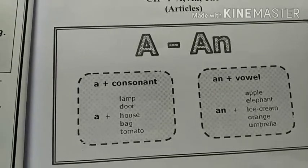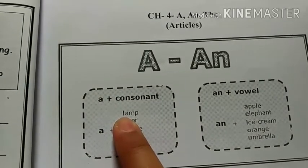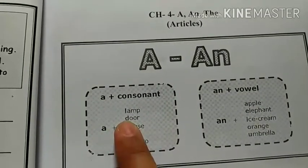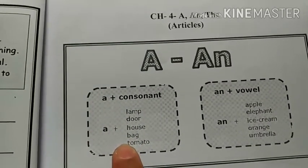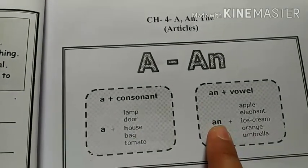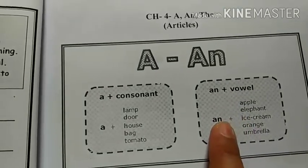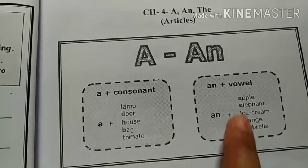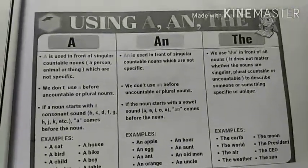Let's see the examples. First one: a lamp - L is a consonant, so we write 'a lamp', 'a door', 'a house', 'a bag', 'a tomato'. Now let's come to the vowel box: an apple, an elephant, an ice cream, an orange, an umbrella - A, E, I, O, U are vowels.